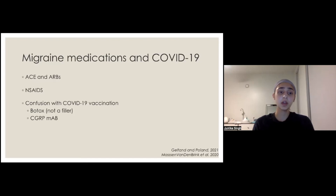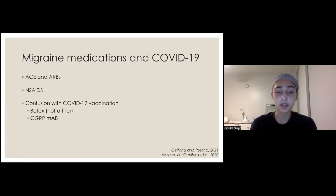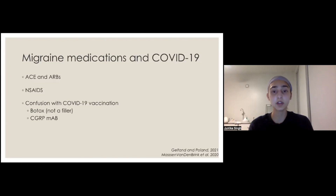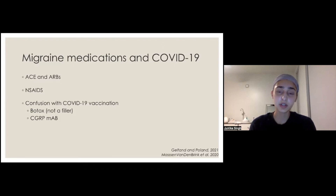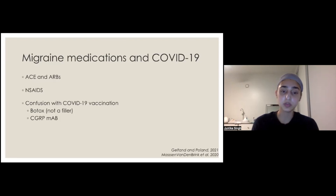Another question some people had was whether, after getting the vaccine, they can take their CGRP monoclonal antibody shot — such as Aimovig, Ajovy, Emgality, or Vyepti infusions — because these are antibodies that some worried might interfere with antibody production from the vaccine. That has not been an issue. You can take your migraine preventative or cluster preventative even if you just got your vaccine.